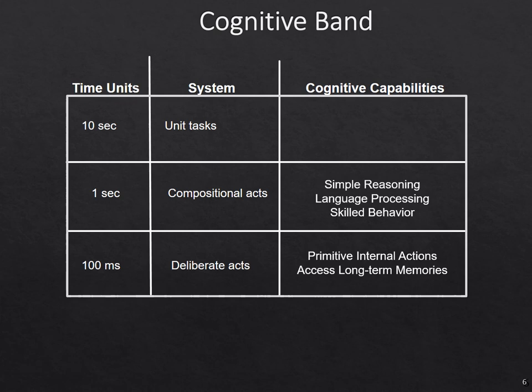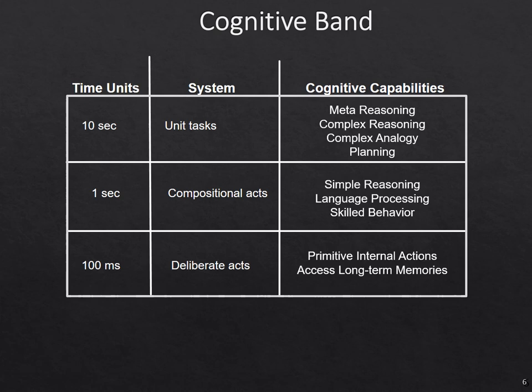Those are then composed together into very simple reasoning that can happen in about a second. Skilled language processing — things you don't really realize you're doing as you process language. Above that are simple tasks where more complex cognitive capabilities come into play, such as doing a short bit of planning, meta-reasoning, or analogy. The cognitive architecture hypothesis is not that planning is a separate module, but that it is a composition of the levels below, built from perhaps a hundred different actions happening at that low level.